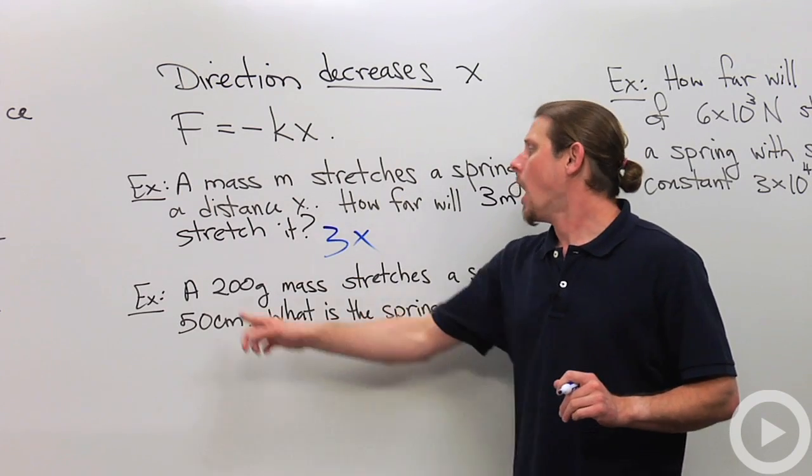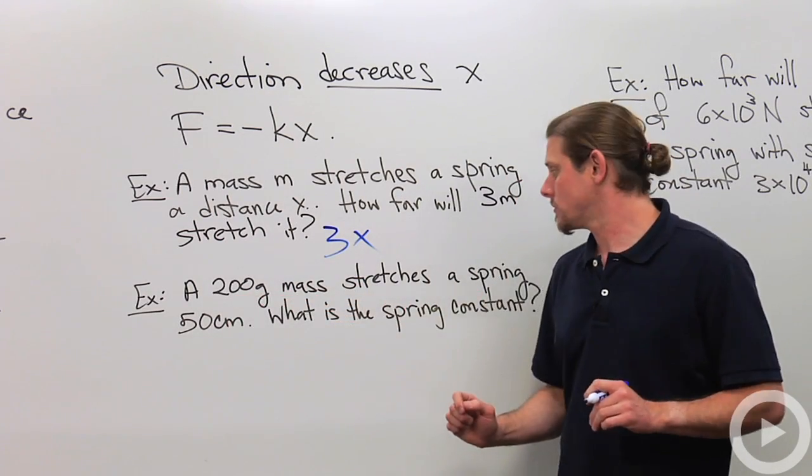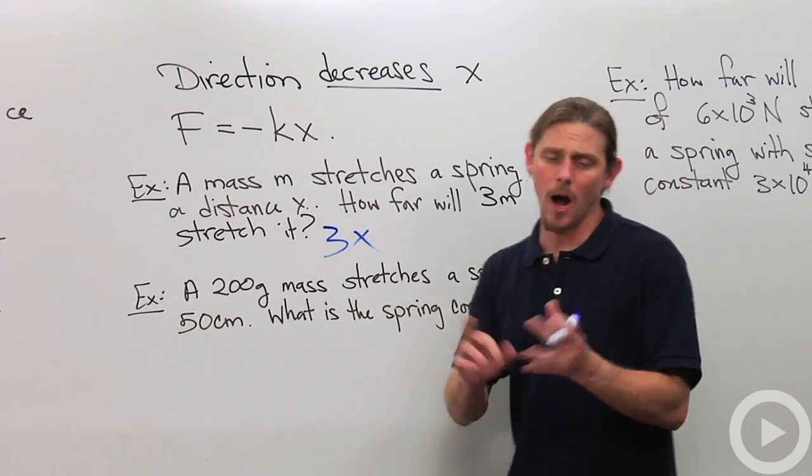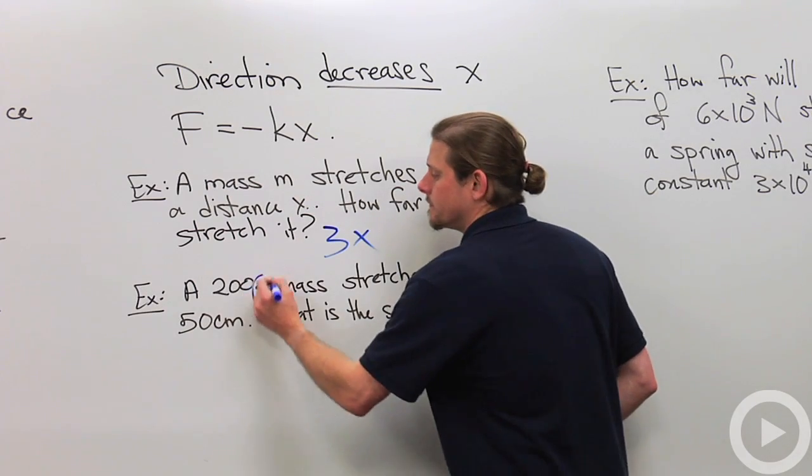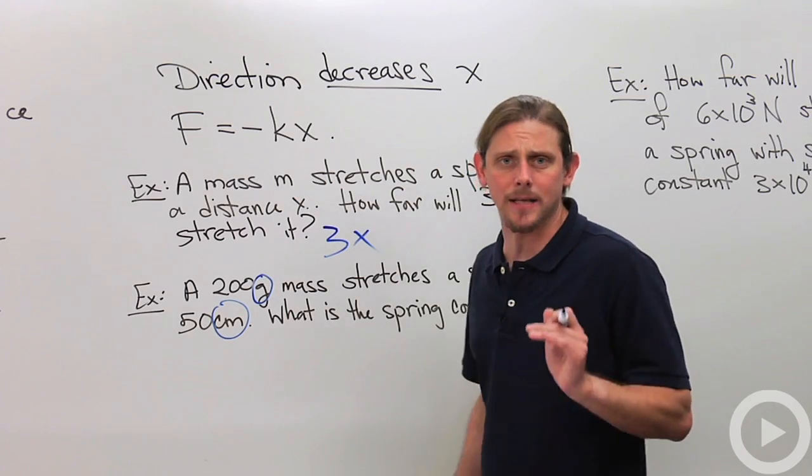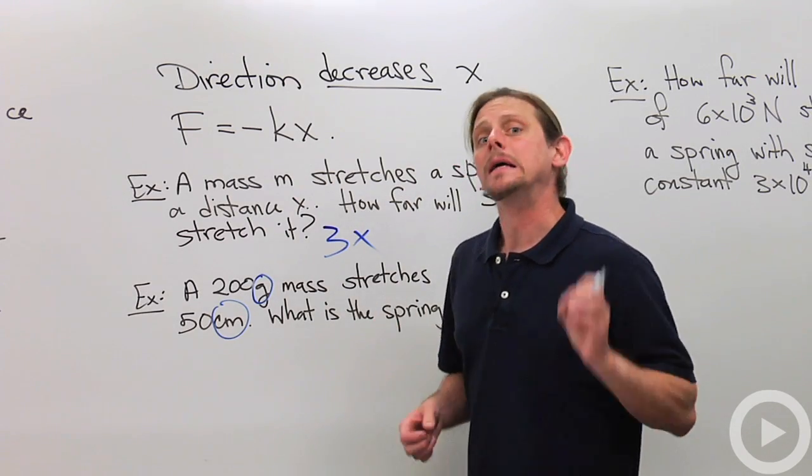This one's got some numbers in it. A 200 gram mass stretches the spring 50 centimeters. What is the spring constant? There's a couple of important things here. First off, we're not in SI units. So we got to change to SI units if we want everything to work nicely. That's first thing.